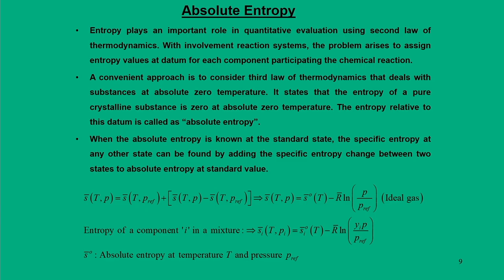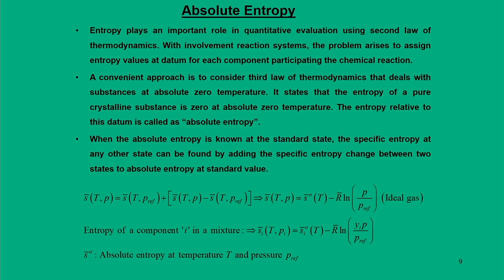Next, we discuss the concept of absolute entropy. Previously we covered how to calculate enthalpy and internal energy during a combustion reaction. Here we emphasize how entropy is calculated. Entropy comes from the second law of thermodynamics and tells us the direction in which the reaction will proceed. The entropy plays an important role in quantitative evaluation using the second law. For reacting systems, the main problem is assigning absolute entropy values with respect to a datum. This datum for entropy is considered at absolute zero temperature, which is the third law of thermodynamics.